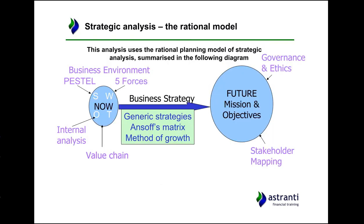So what exactly is strategic analysis? It's where you utilize the rational model — you situate where you want the business to be in terms of your mission and objectives, and how you want to govern and manage stakeholders through things like stakeholder mapping. From that vision of where you want to be, you look at where the business currently is and discuss things like SWOTs, the business environment, value chain, and generic strategies to achieve the mission and objectives.